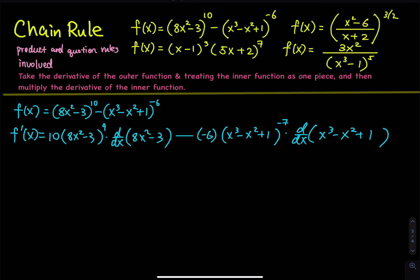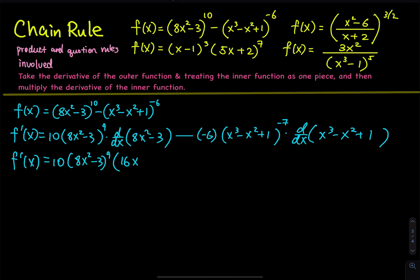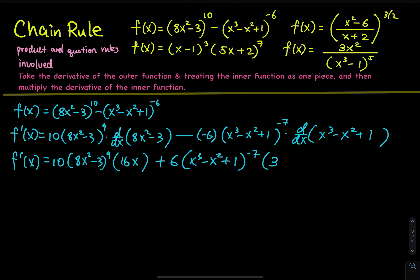The next step, we take care of the derivative. So f prime of x — this is a 10, and then 8x squared minus 3 to the 9th power. Then bring the 2 down, you have a 16, so 16x. The derivative of 3 is 0. Then minus negative 6 — that becomes a plus 6 — x to the third minus x squared plus 1, raised to the negative 7. Then bring the 3 down: 3x squared. Bring the 2 down: 2x. Derivative of 1 is 0.